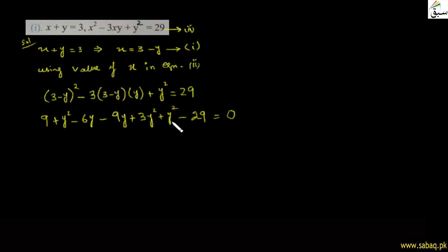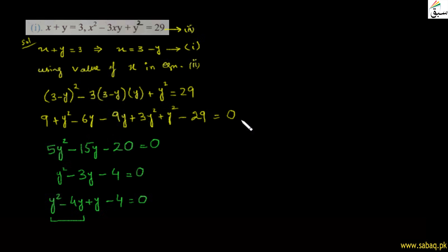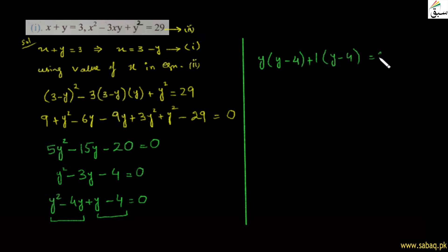Simplify کریں: 3y² + y² = 5y² بن جاتے ہیں، −6y − 9y = −15y، اور constant −4 آجاتا ہے۔ Equation: 5y² − 15y − 4 = 0۔ Mid-term break کریں: y² − 4y + y − 4 = 0۔ Grouping سے y(y − 4) + 1(y − 4) = 0۔